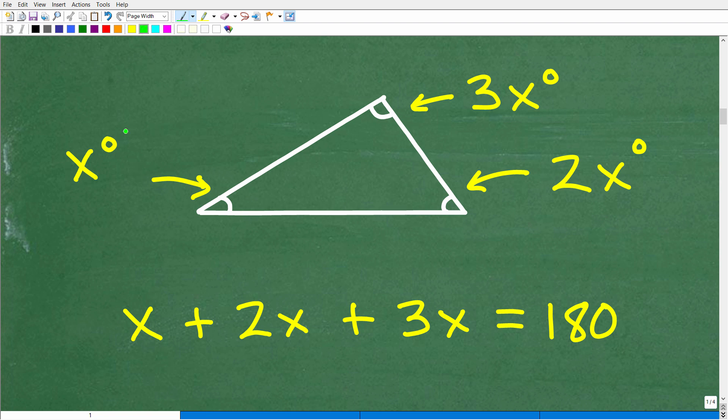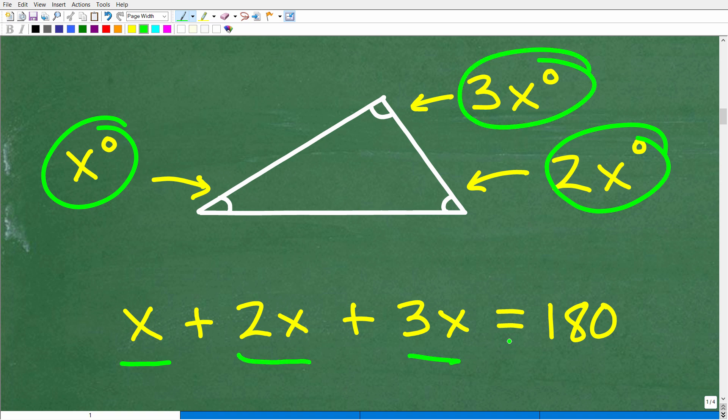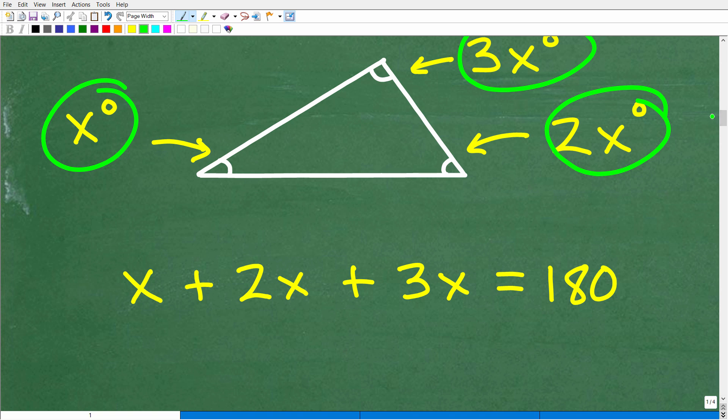All right, so this is what we have here. We have this angle, x, plus this angle, 2x, plus this angle, 3x, is equal to 180 degrees. We don't need to write that degree symbol in here, because it's just assumed that we are dealing with degrees. All right, so at this point, what we have to do now is solve this equation. So indeed, you have to have some basic algebra skills. So let's go ahead and see if you can solve this basic equation. This is not that difficult.